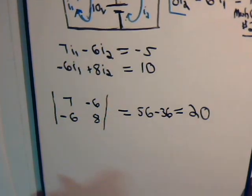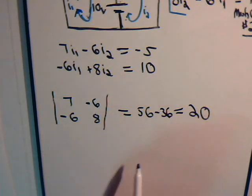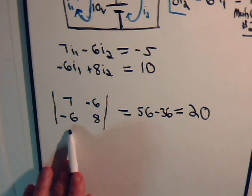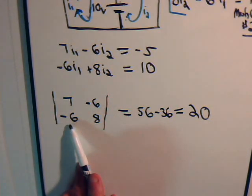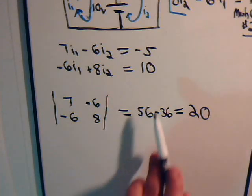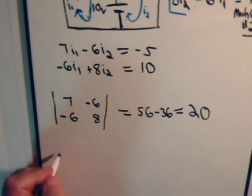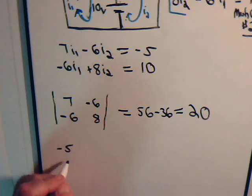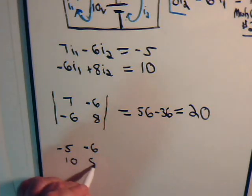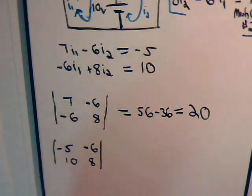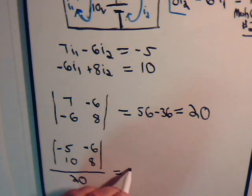Okay, so what's the value of this determinant? Here we have 56 minus plus 36. That equals 20. Now, to determine I1, we go back and we can work with this matrix right here, except that these were the coefficients of I1, and we're going to replace that column with these numbers right here. So, we have minus 5, 10, leave that column alone, the I2 column, and that matrix divided by 20, that equals I1.